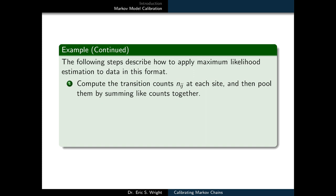We'll take the following steps in order to describe how to apply maximum likelihood estimation of our transition probabilities to data that's in this particular format. We'll compute the transition counts, NIJ, at each site. And then once we've got a set of transition counts, essentially for each row, each time series in our data set, we'll just pool them by summing like transition counts together.